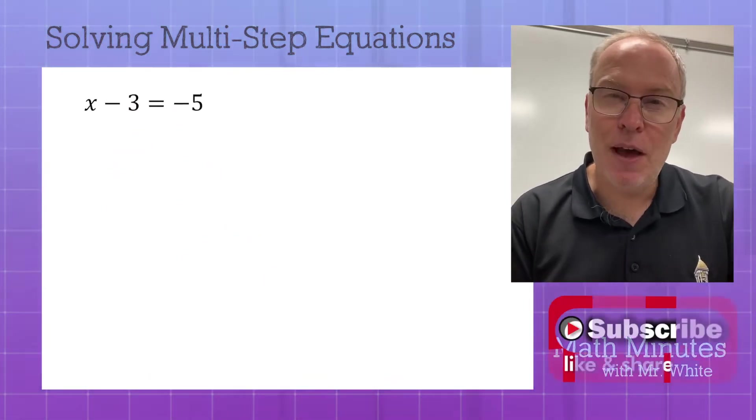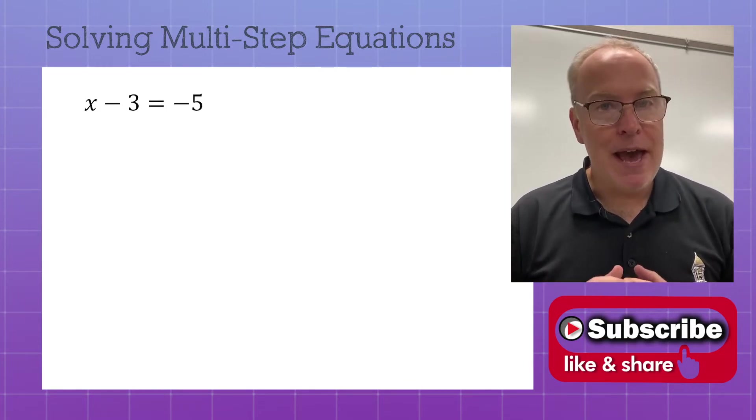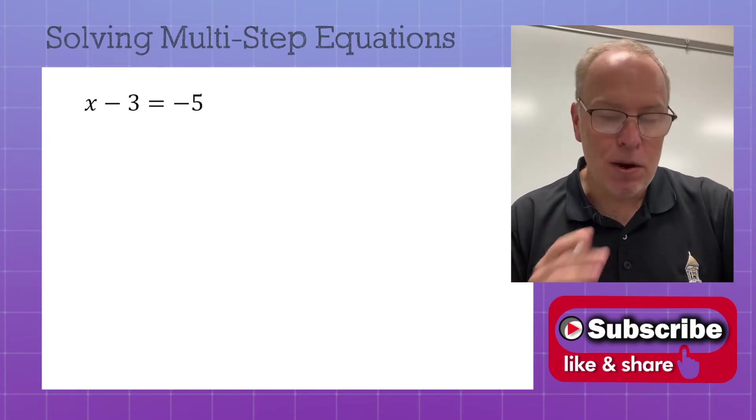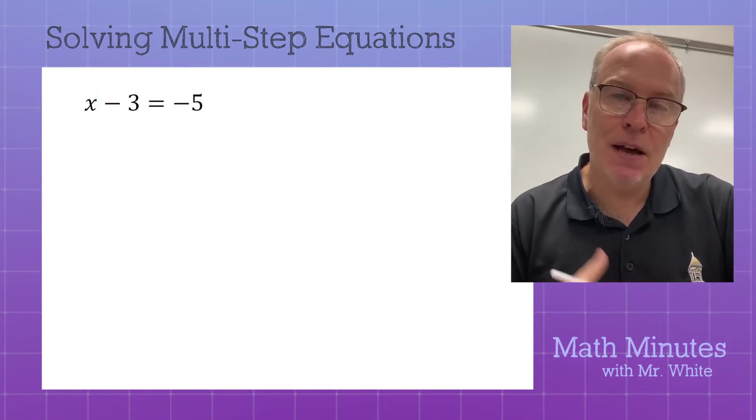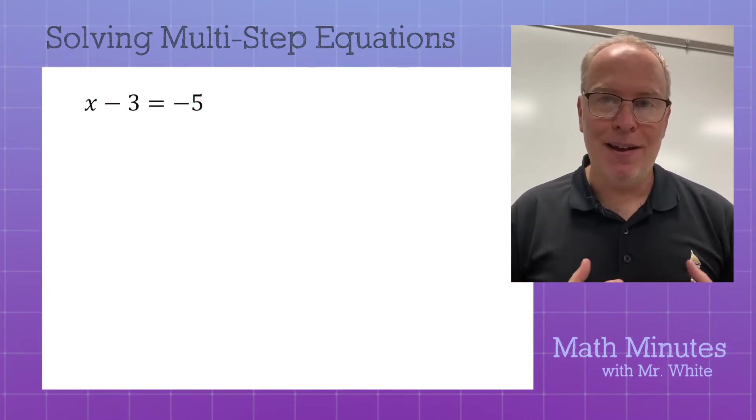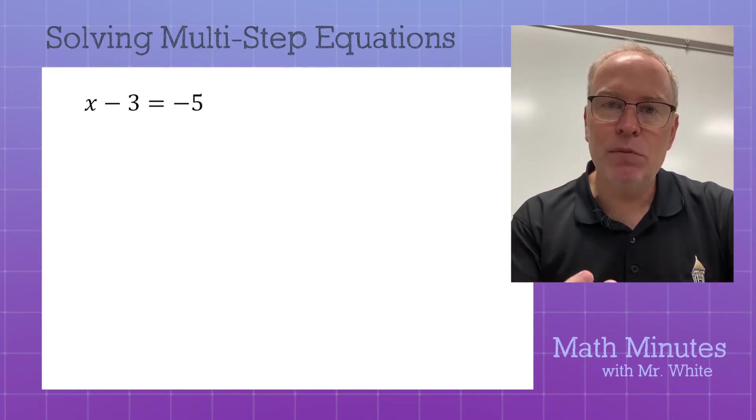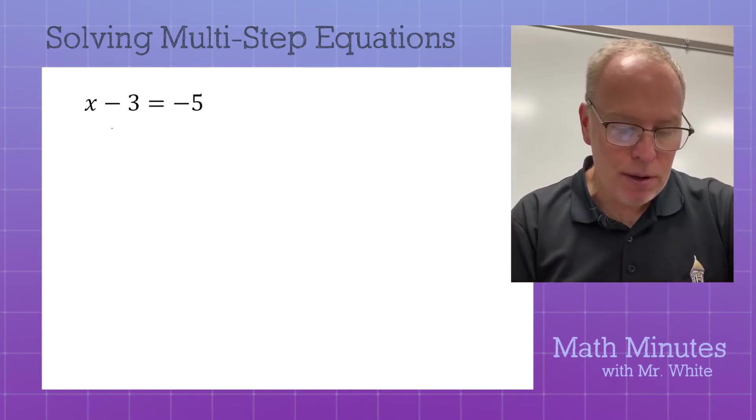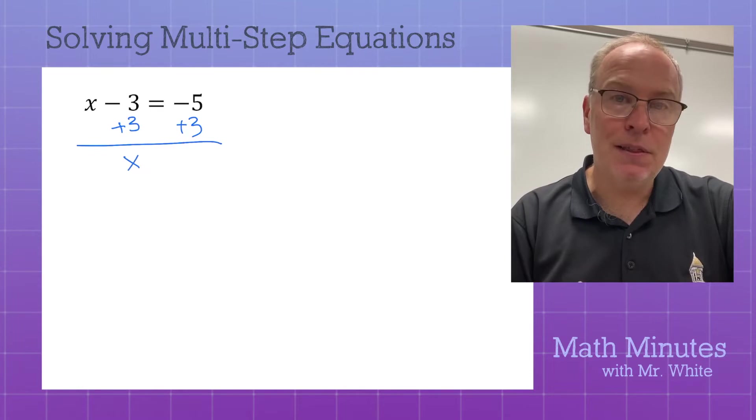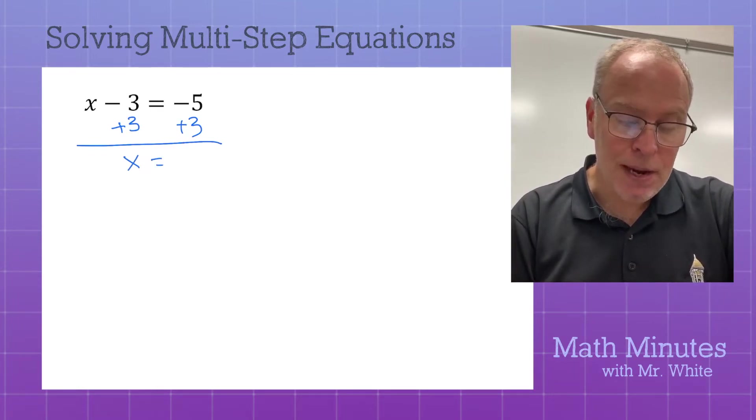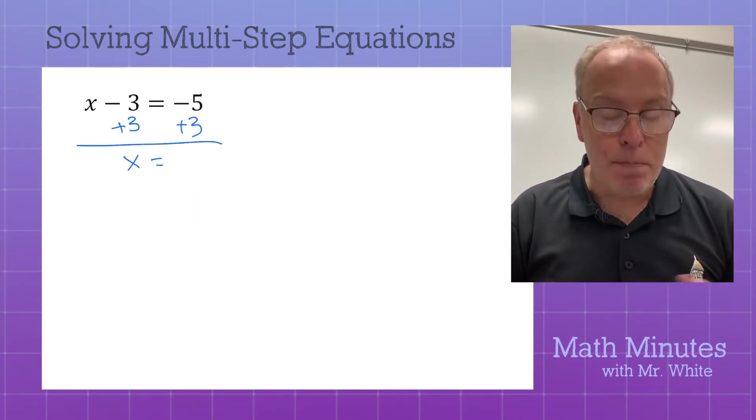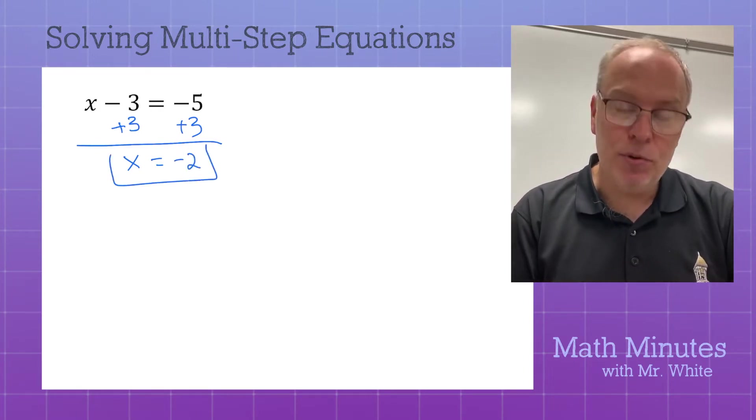Let's look at this next equation. So that was subtracting on both sides. Now, here we have x minus 3 equals negative 5. We want to get rid of the negative 3. The negative 3 is the number that we need to get rid of. So don't even worry about that negative 5. It's along for the arithmetic ride, I like to say. How do we get rid of a negative 3? What's the opposite of subtracting 3? What is the inverse operation? Add 3.